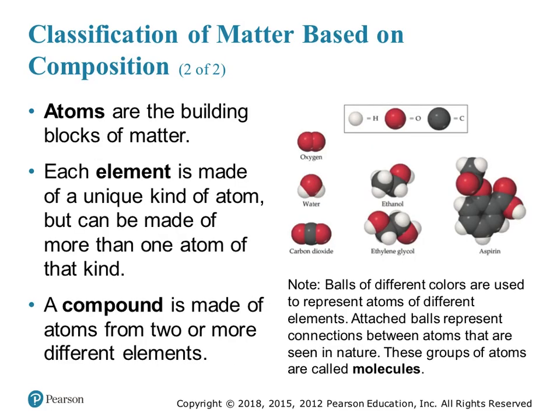Atoms are the building blocks of matter. Each element is made of a unique kind of atom, but it can be made of more than one atom of that kind. So here you see oxygen, O2 — it's part of Brinkelhoff. A compound is made of atoms from two or more different elements. So here you have the example H2O: two hydrogens, one oxygen. If I have two carbons, one oxygen, and six hydrogens, I form ethanol.